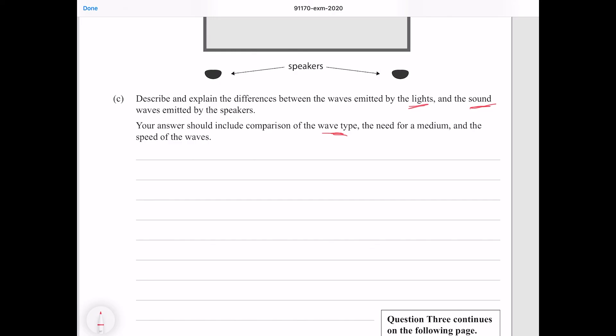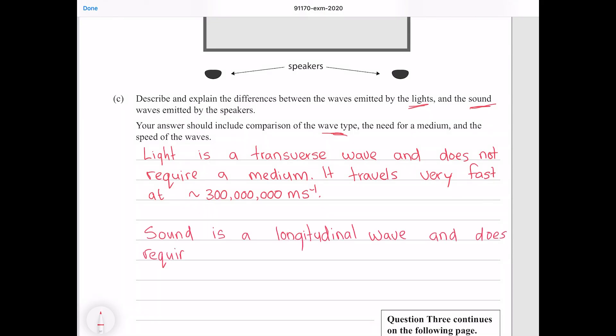And as for the speed of the waves, light goes very quickly at 300 million meters per second whereas sound is more in the realm of 300. So let's write that down. Light is a transverse wave and does not require a medium. It travels very fast at roughly 300 million meters per second. Sound is a longitudinal wave and does require a medium. It travels much slower at roughly 340 meters per second in air.